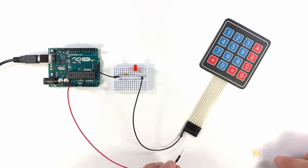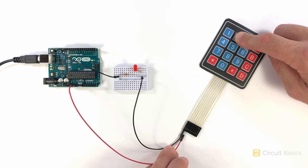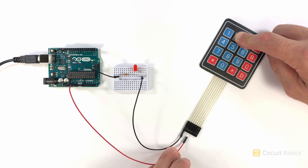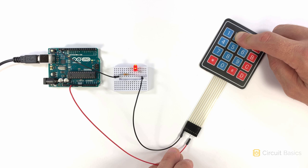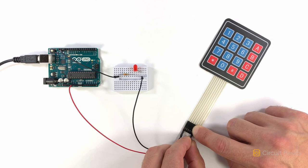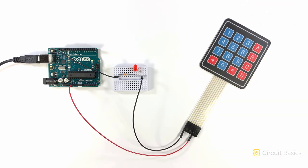So the LED lit up when I connected it to this pin. So this pin must be connected to column three. Now press and hold another button in that row. Insert the red wire into the other pins. The LED lit up when I connected it to this pin. So this one must be connected to column two. Now just keep doing this until you have everything mapped out.